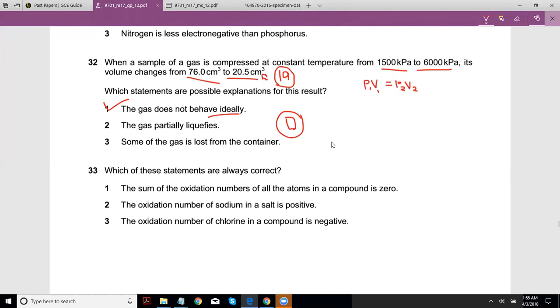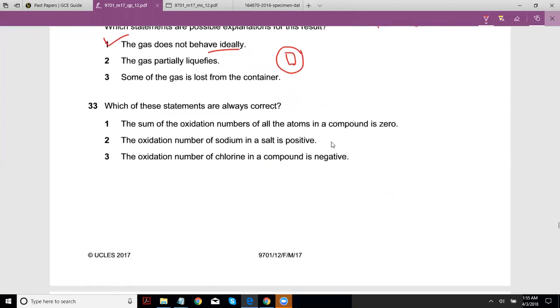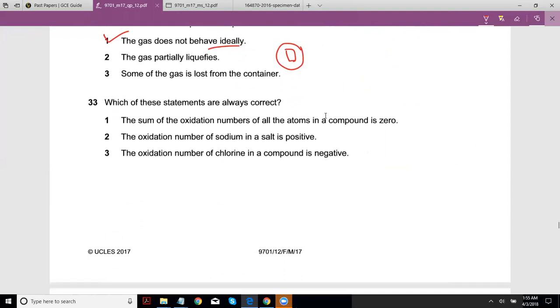So we had the answer - it was 31 D and 32 D. Which of these statements are always correct? The sum of the oxidation numbers of all the atoms in a compound is zero. Does that matter? Are we overthinking this? When you talk of a compound, it's generally neutral - you don't talk about an ion in a charged compound.